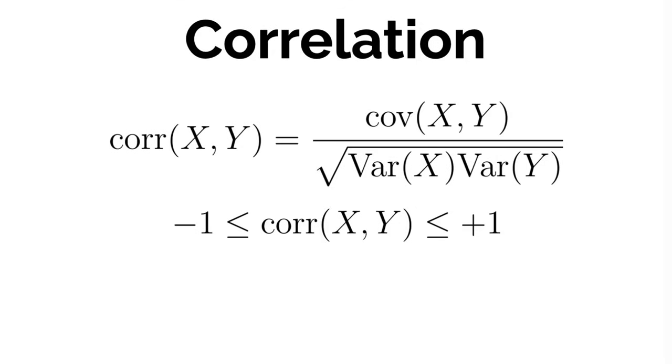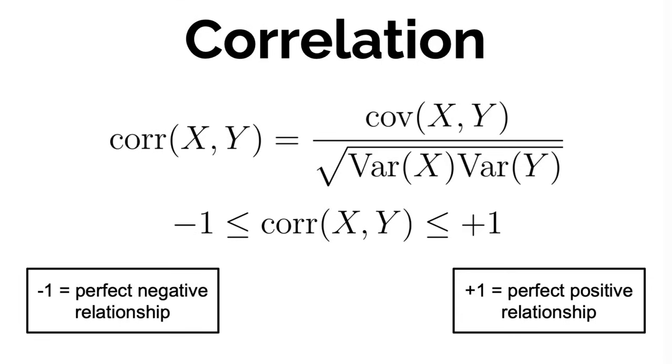Thus, the correlation varies between minus 1 and plus 1, plus 1 meaning that the two variables have a perfect positive relationship, while a value of minus 1 would mean that the two variables would have a perfect negative relationship. And the closer the correlation is to either of those two values, the stronger the relationship between our two random variables would be. And the closer the correlation is to 0, the weaker the relationship between those two random variables will be.